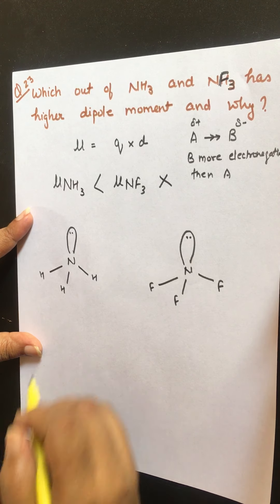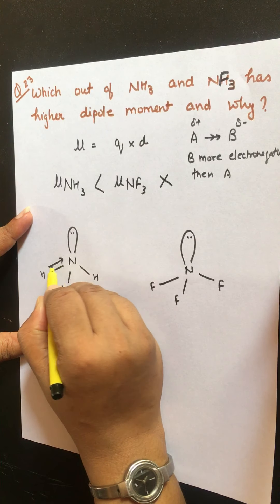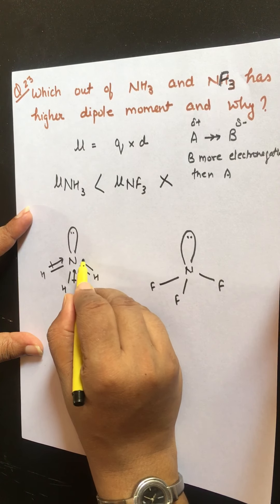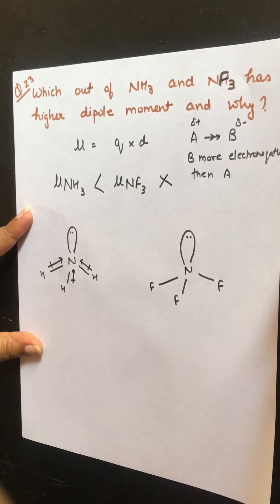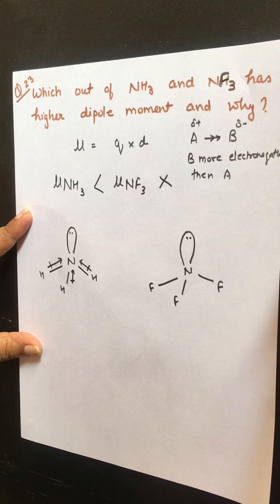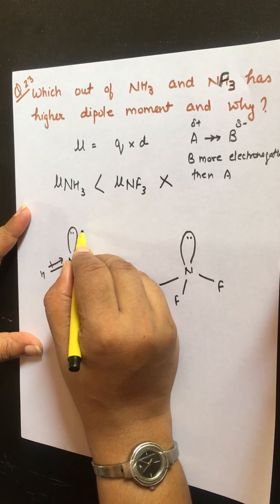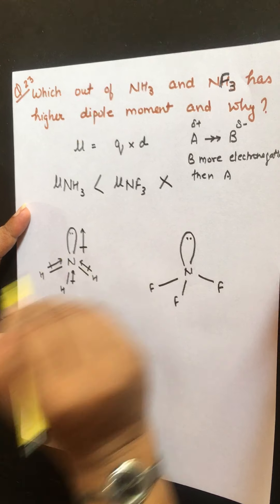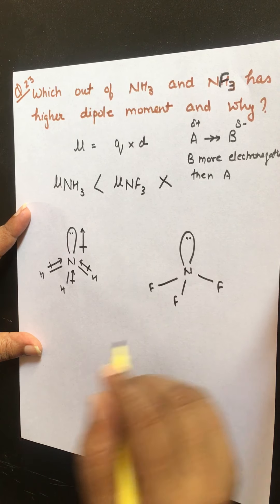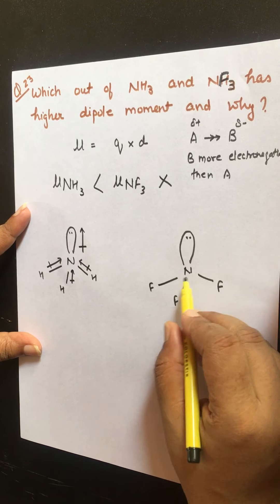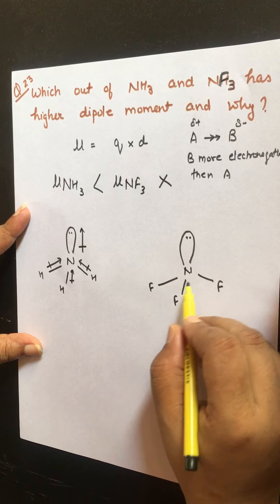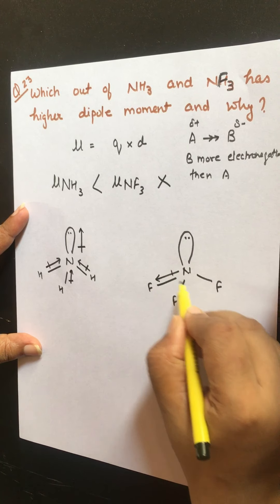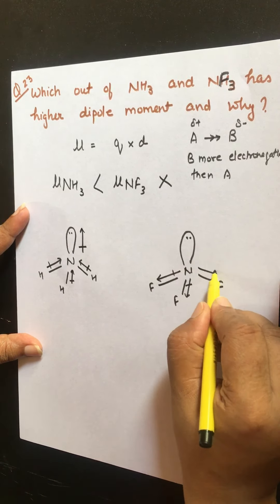In ammonia, there are three N–H bonds and one lone pair. Nitrogen is more electronegative than hydrogen, so we can show the bond dipoles pointing towards nitrogen. The dipole for the lone pair is shown pointing away from the central atom, towards the lone pair.